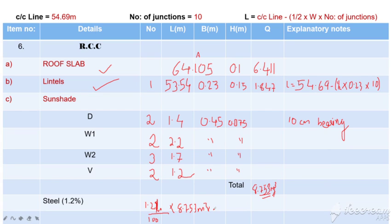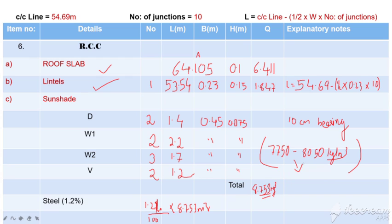The quantity of RCC uses steel density of 7,865 kg per meter cube. Steel density is 7,865 kg per meter cube. So we multiply by 7,865 kg per meter cube. The meter cube will cancel, giving us how many kg of steel is available.